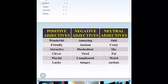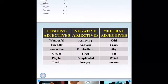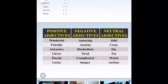In this box I'm presenting positive adjectives, negative adjectives, and neutral adjectives. Positive: wonderful, friendly, attractive, clever, playful, and lucky. Negative: annoying, anxious, disobedient, tired, complicated, hungry, and angry. Neutral: odd, crazy, shy, fat, weird, and curious. These are the three ways in which we can identify adjectives.